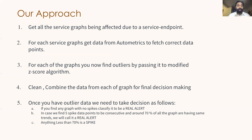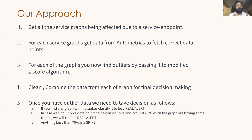What we did finally was get all the service graphs affected due to a service endpoint, and for each graph we get the data from Auto Metrics to fetch the correct data points. For each graph we find outliers by passing it through the modified Z-score algorithm, then clean and combine the data for final decision making. If we find any graph with no spikes at all, it is classified as a real alert. If five consecutive spike data points are found and around 70% of those graphs show almost the same trend, we call it a real alert. Anything less than 70% is considered a spike — the 70% mark is our sweet spot after extensive iteration.